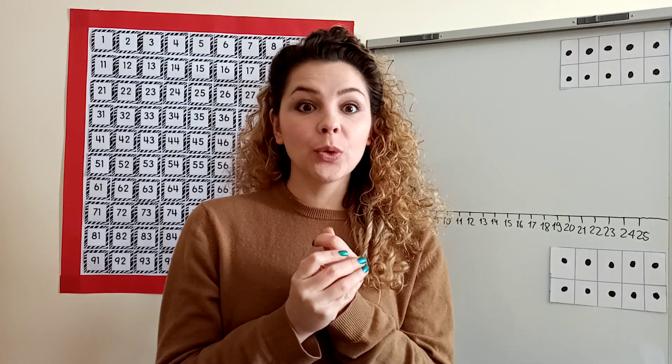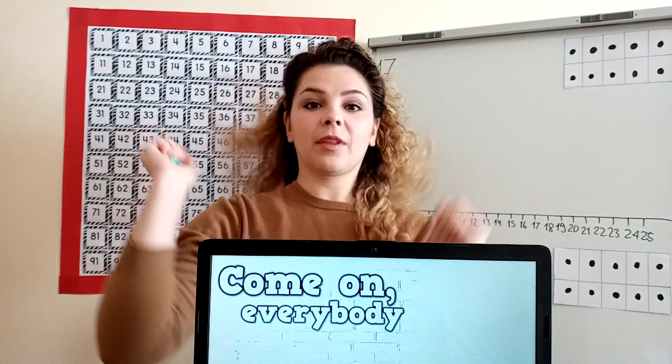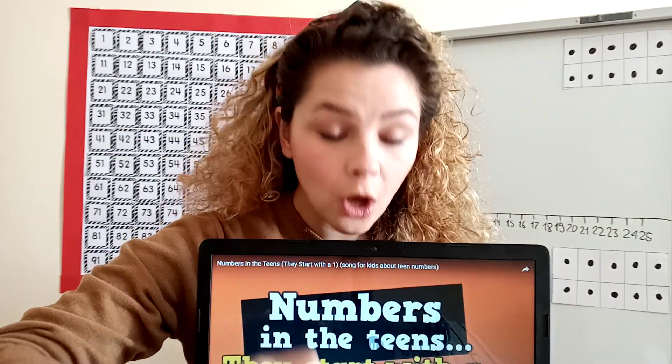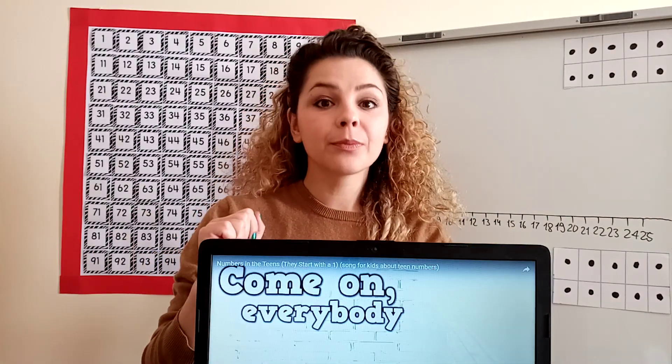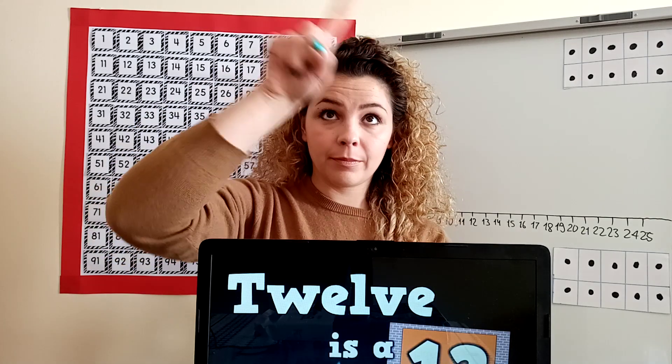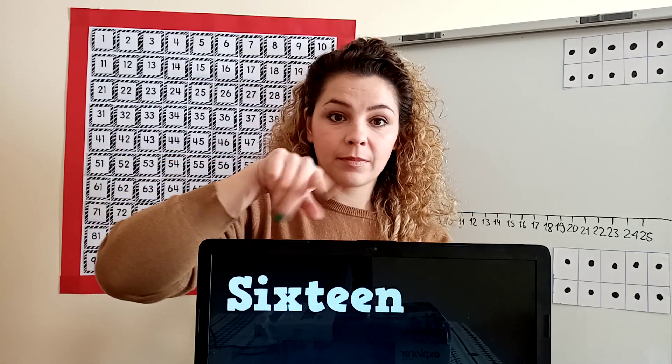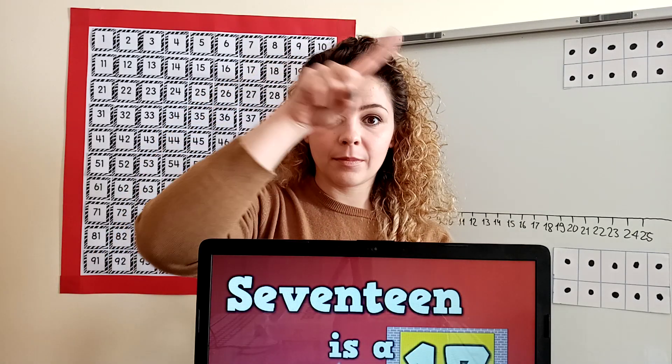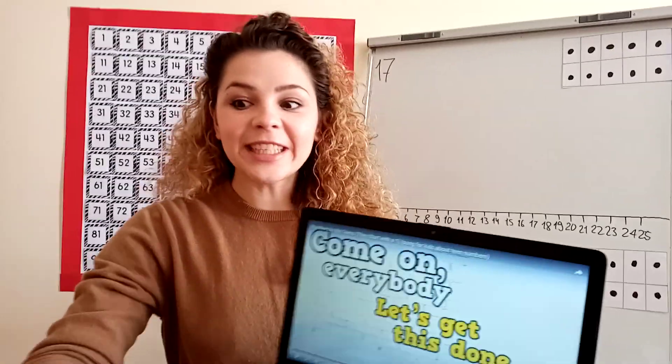We are going to do some air writing of our teen numbers. I hope you can see the song. Tomorrow we're going to do this in Zoom as well, so I will be able to see if you've been practicing and how good you're doing. 11 is a 1 and a 1, 13 is a 1 and a 3, 14 is a 1 and a 4, 15 is a 1 and a 5, 16 is a 1 and a 6, 17 is a 1 and a 7, 18 is a 1 and an 8, 19 is a 1 and a 9. Come on everybody, let's get this done. You can continue practicing at home. I just did all numbers from 11 to 19.